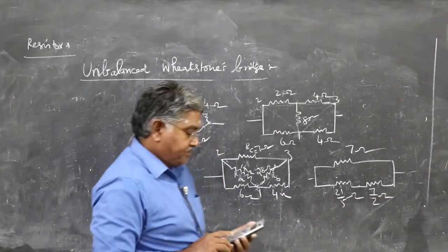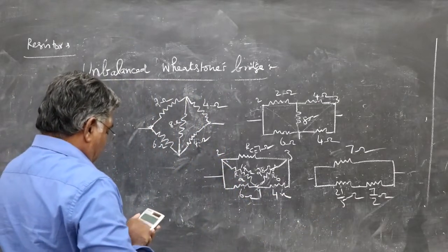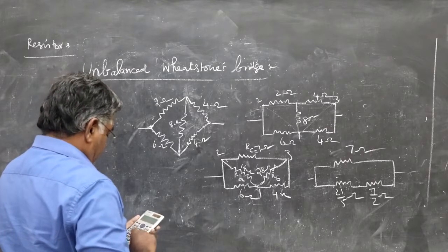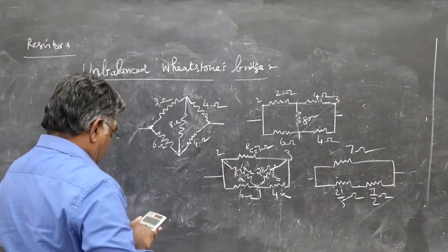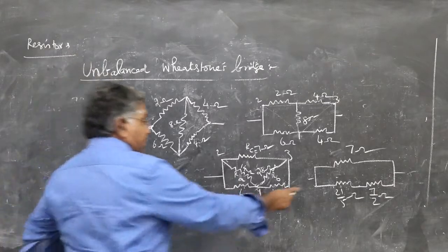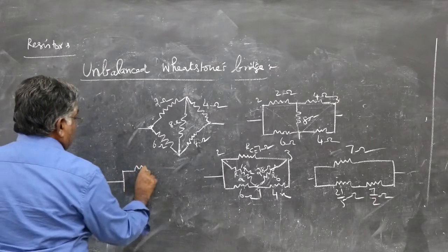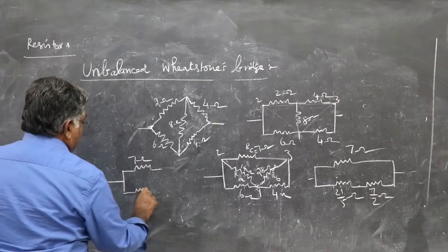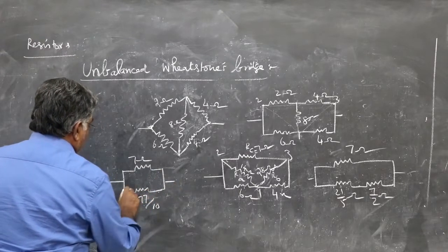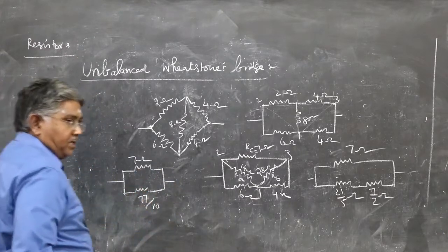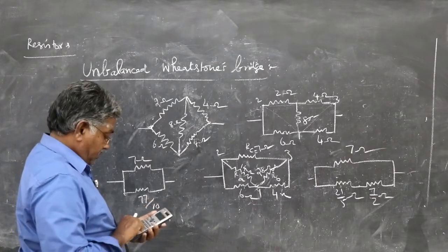So these two in series: 21 by 5 plus 7 by 2, 77 by 10, these two in series. So this is 7 ohm, this is 77 by 10 ohm. Now they are in parallel. Now you see how to find out the effective resistance.